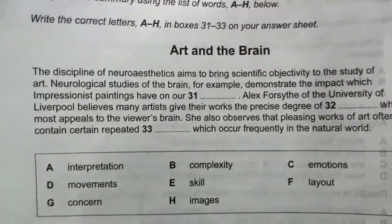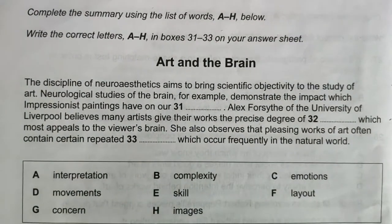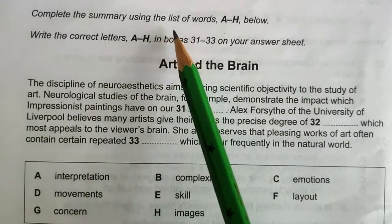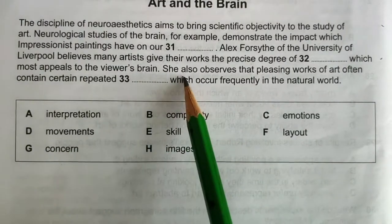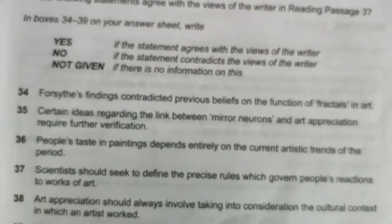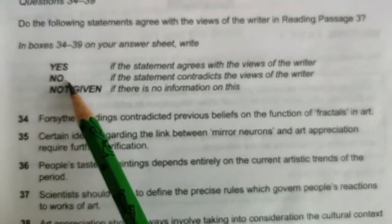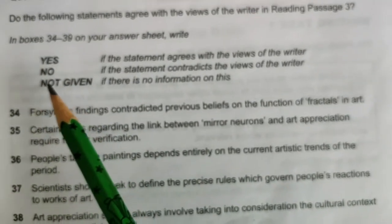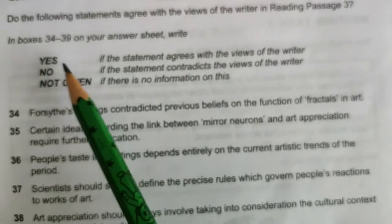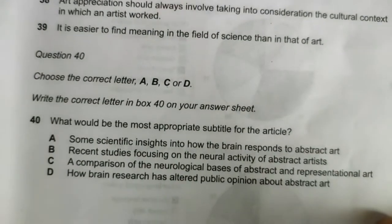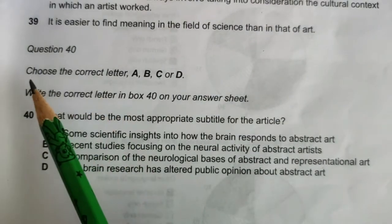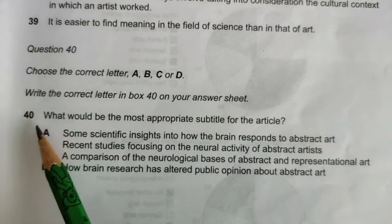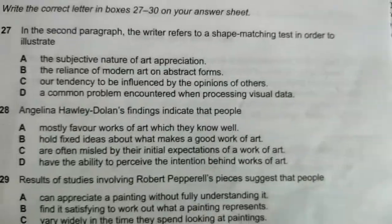After that, questions 31 to 33 require you to complete the summary using a list of words from a help box. Then questions 34 to 39 are Yes, No, or Not Given. Remember: if the question says Yes/No/Not Given, you must use those exact words — not True/False/Not Given. The last question, number 40, is again MCQ with a single question.